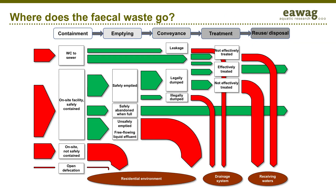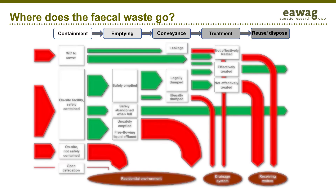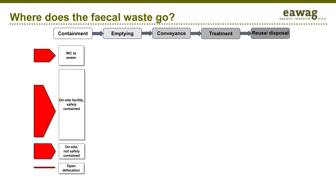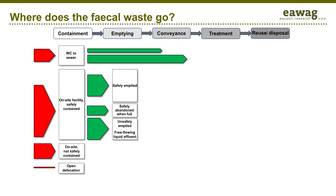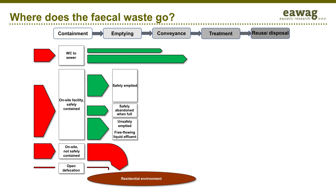This is a fecal waste flow diagram, or SFD. Along the top is the generic sanitation service chain. The red arrows on the left represent the flow of fecal waste split up between the various types of toilets used by the city's population. The width of the arrows is proportional to the number of people whose waste follows each route. The green horizontal arrows represent safely managed fecal waste and the red ones unsafely managed waste. As each waste stream flows from left to right, the fecal waste is either safely managed or escapes into the environment.